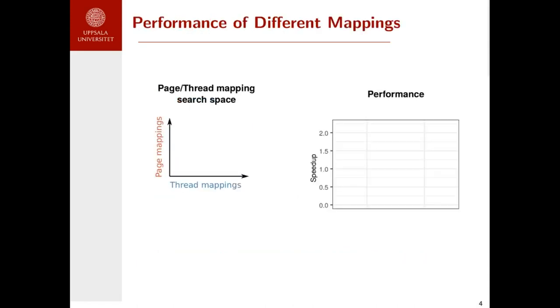So let me illustrate this. On the left plot, we will consider different search spaces of thread and page mappings. On the right plot, we will look at what is their best resulting performance that can be achieved by looking at this type of mappings. If we are to execute an application, we need to select a specific thread mapping and page mapping.